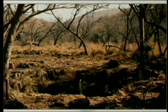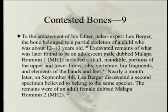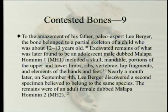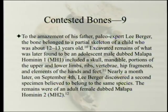To the amazement of his father, paleo expert Lee Berger — he just happened to be a paleo expert's son — the bone belonged to a partial skeleton of a child about 12 to 13 years old. Excavated remains of what was later found to be an adolescent male, dubbed Malapa Hominin 1 (MH1), included the skull, mandible, portions of the upper and lower limbs, ribs, vertebrae, hip fragments, and elements of the hands and feet.